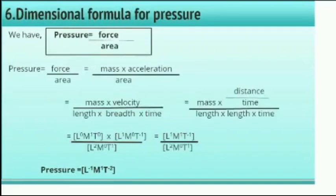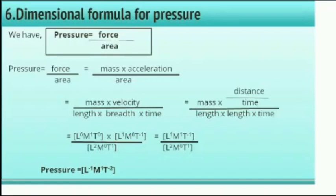The next example is pressure. Pressure equals force divided by area, which equals mass into acceleration divided by area. Substituting the formulas for acceleration and area, we get mass into velocity divided by length × breadth × time. The dimensional formula for pressure is [L⁻¹, M¹, T⁻²].